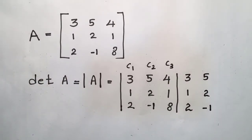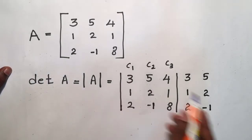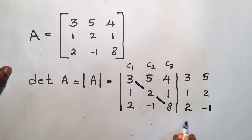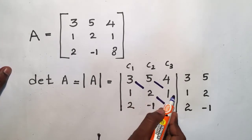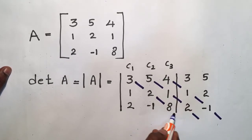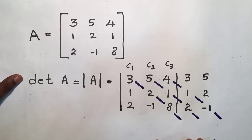Then I can get the determinant of matrix A by using this special and easiest method. Now I am going to identify the diagonals like this, and then I am going to multiply the numbers of each diagonal.